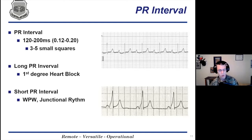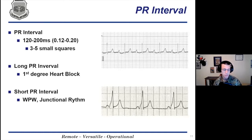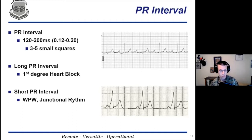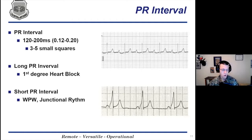A short PR interval can also signify many things. One important consideration is the possibility of Wolff-Parkinson-White syndrome — WPW — which changes our course with the patient, the different medications we give, and can clue us in that the patient may go into SVT or another excitable arrhythmia later. A short PR interval can also be caused by a junctional rhythm, where electricity is not firing from the proper SA node location but is instead coming from somewhere else in the ventricle.